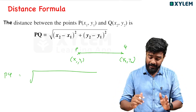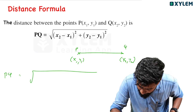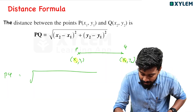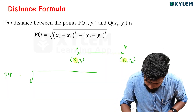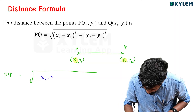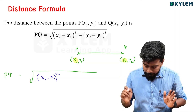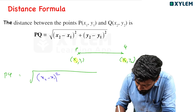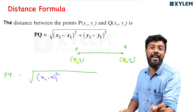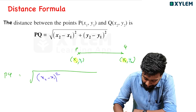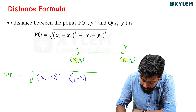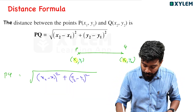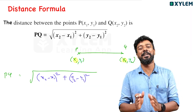The x-coordinates difference is x2 minus x1, and we square it: (x2 - x1) whole square. Similarly, the y-coordinates difference is y2 minus y1, squared: (y2 - y1) whole square. So the distance formula is: PQ = √((x2 - x1)² + (y2 - y1)²). This is the distance formula.